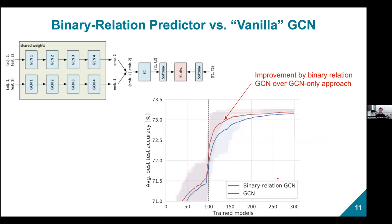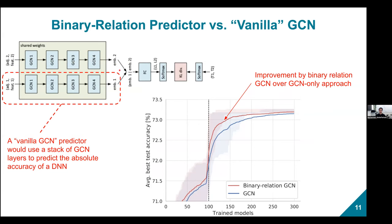Our model uses a stack of GCN layers — graph convolutional networks — because they learn the structure of the input neural network description better than a vanilla MLP. Comparing to a vanilla GCN baseline that predicts absolute accuracy, our binary relation prediction improves accuracy somewhat. Converting from a regression problem to binary classification helps, but there is still an upfront cost to train the predictor before it can be used for ranking and finding good models.